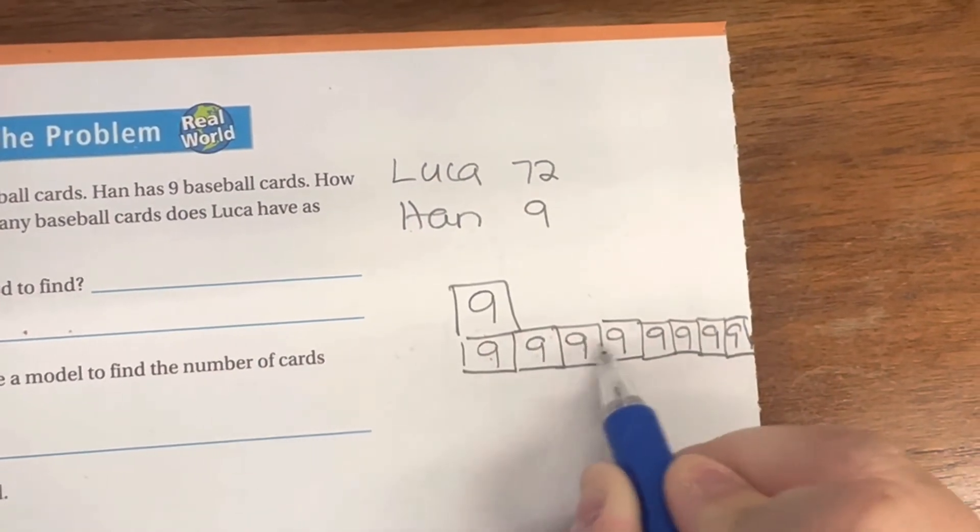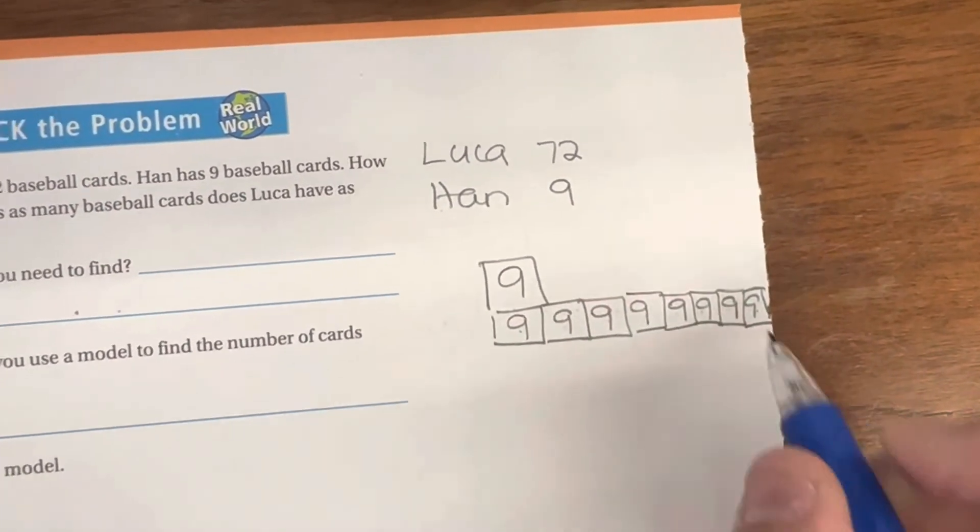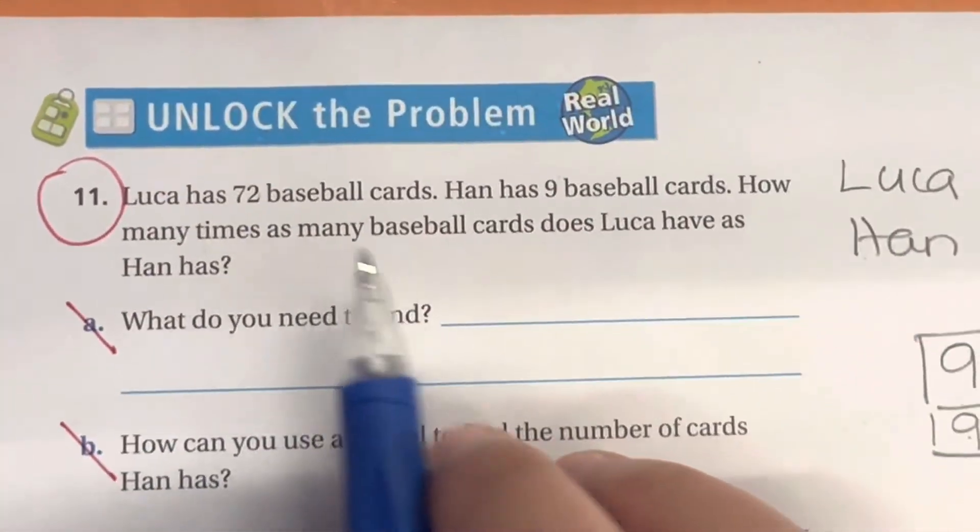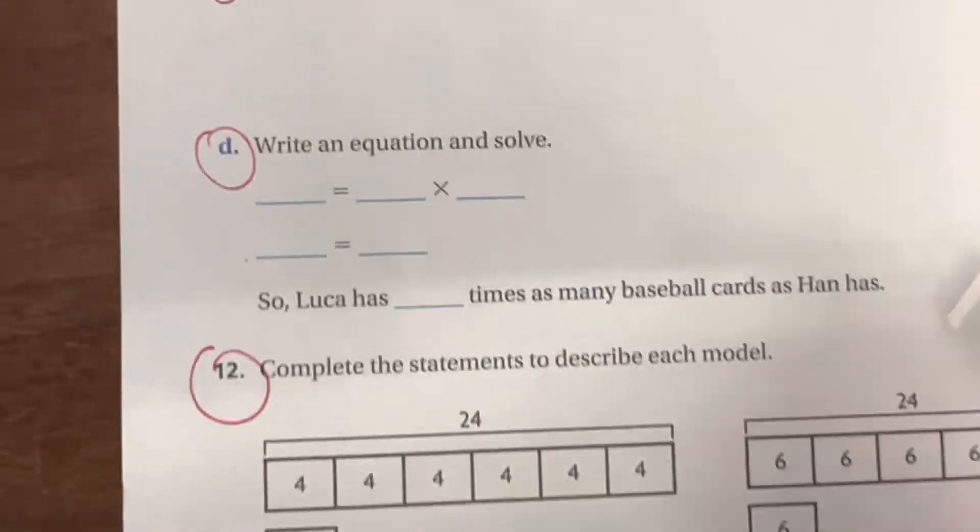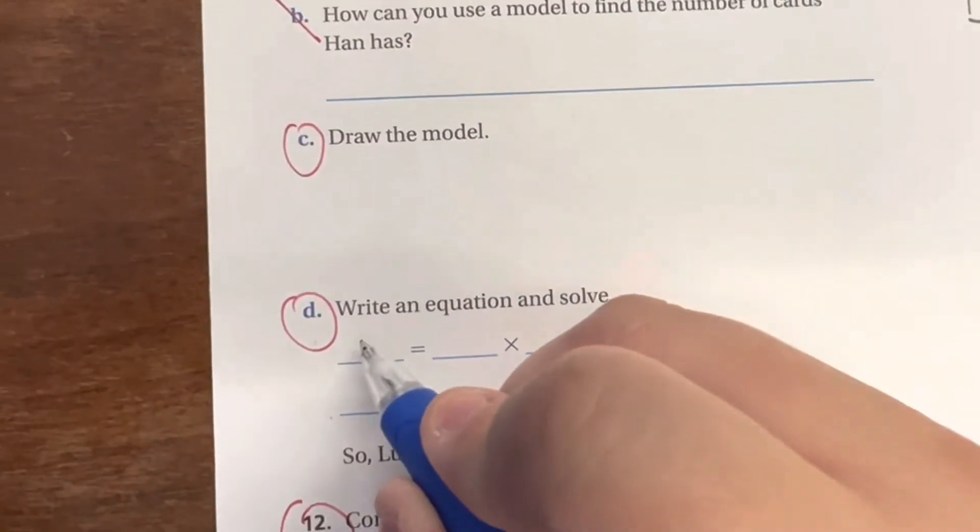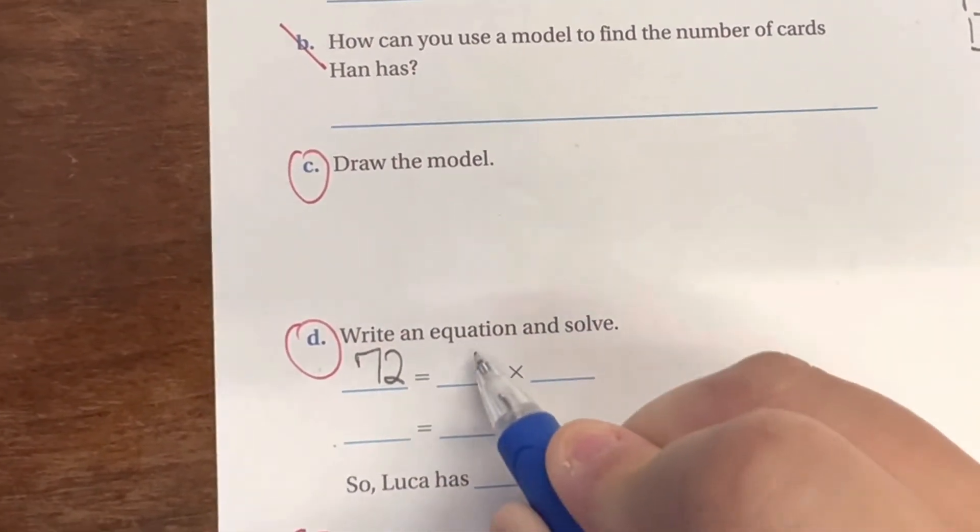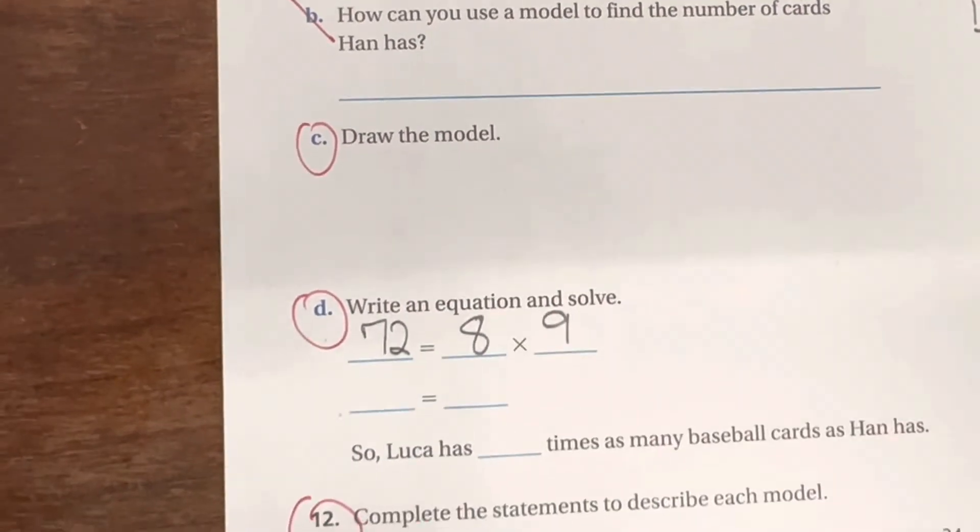So 1, 2, 3, 4, 5, 6, 7, 8. I had to do it 8 times. So right here, how many times as many? I had to do it 8 times. So that equation would turn out to be, that's 72, is 8 times as many as 9.